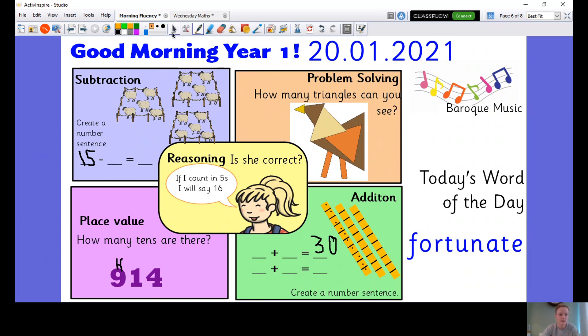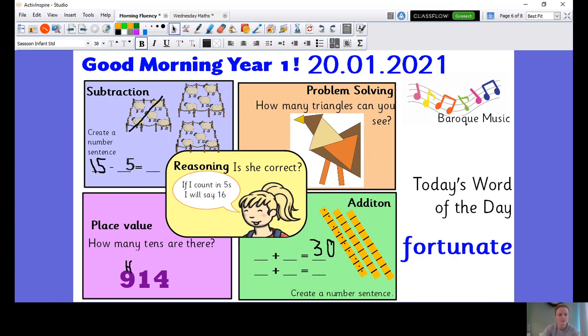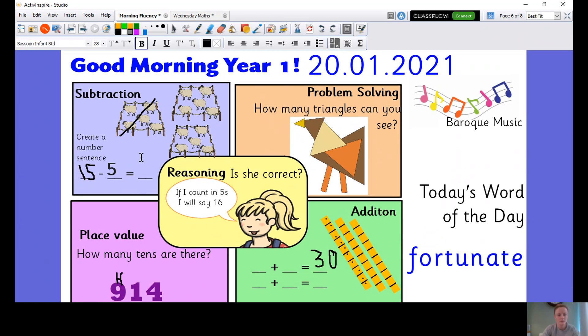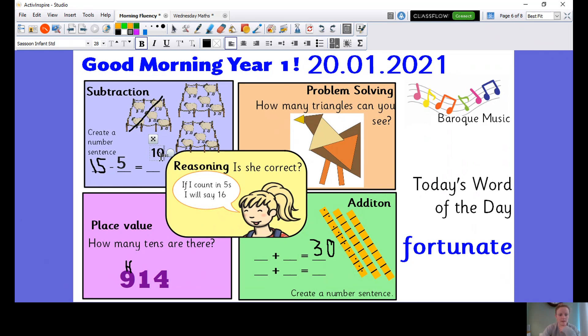All right, well done for doing that. So I've got 15. I'm going to take away one group. I'm going to take away this group here. So 15 minus 5 equals, how many do I have left? 5, 10. That's right. So then I have 10 left. So I've got 15 minus 5 equals 10.